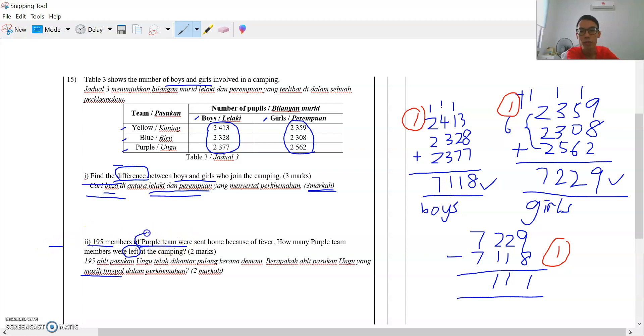From the Purple Team members. A lot of students, they see Purple Team and they look at Purple Team, and they take this number: 2,377 minus 195. Is this correct? Purple Team members includes the boys and the girls. You cannot just take the boys and minus. You must take the boys plus the girls first, and then only you minus. Don't forget about the girls. Purple Team includes boys and girls.